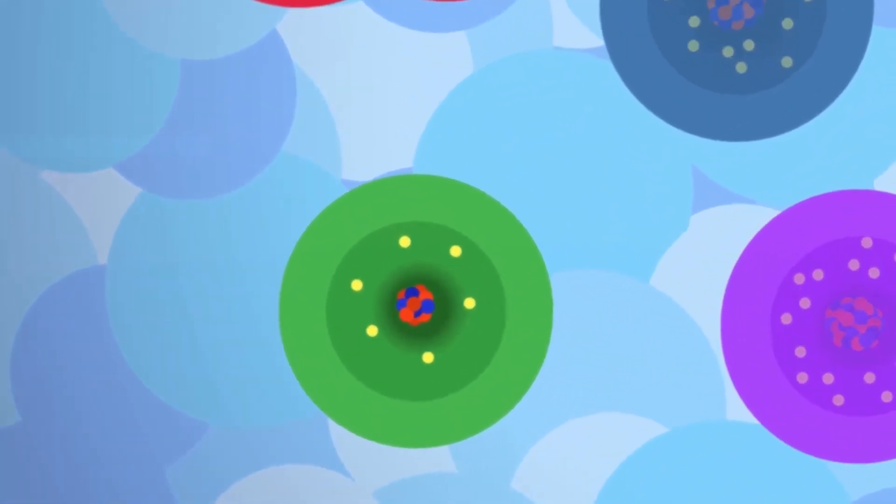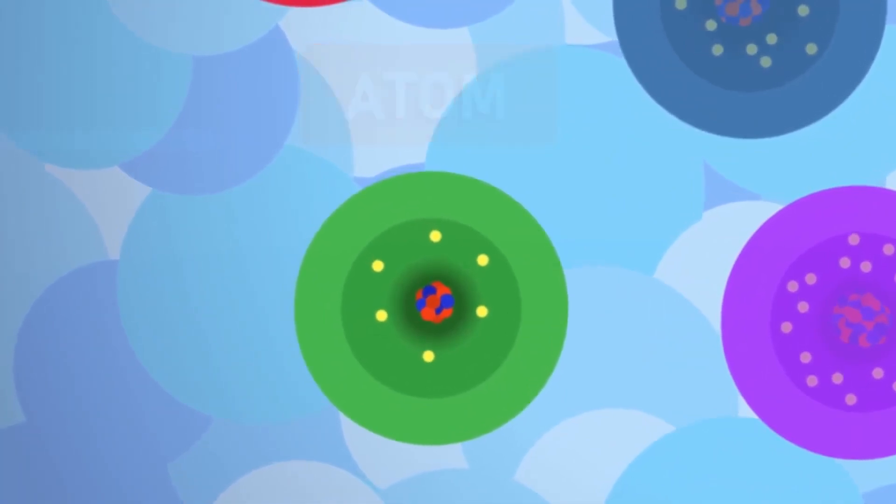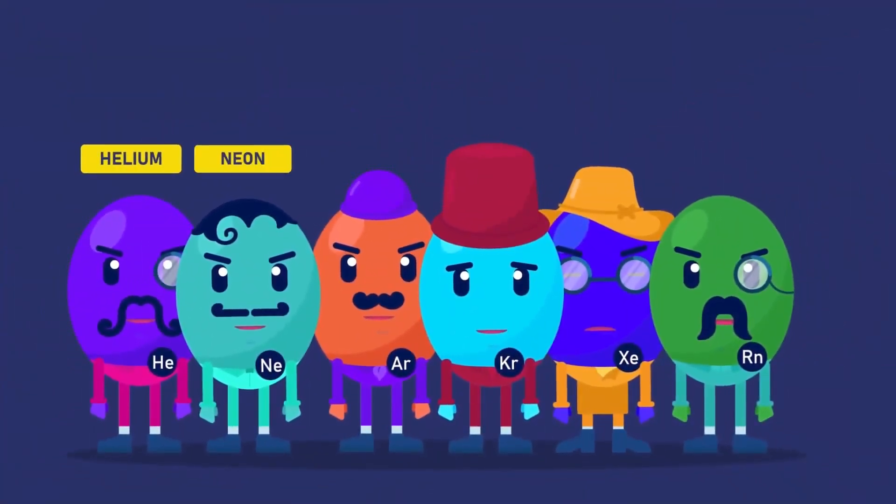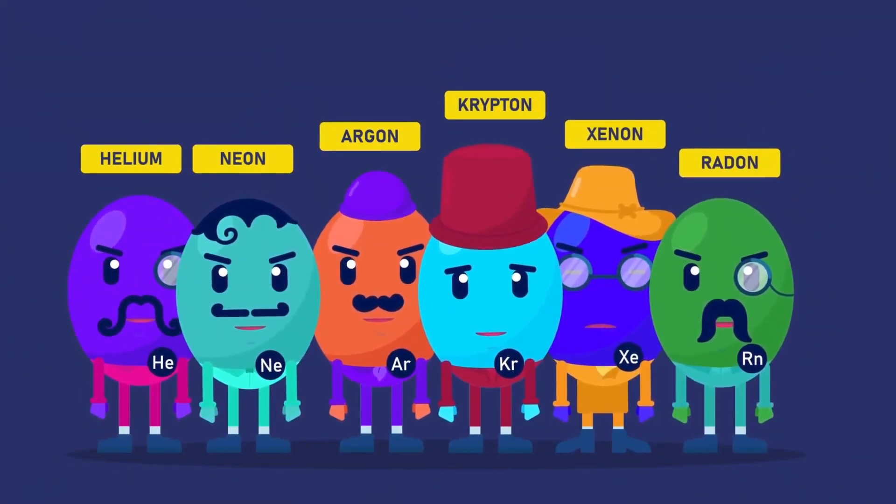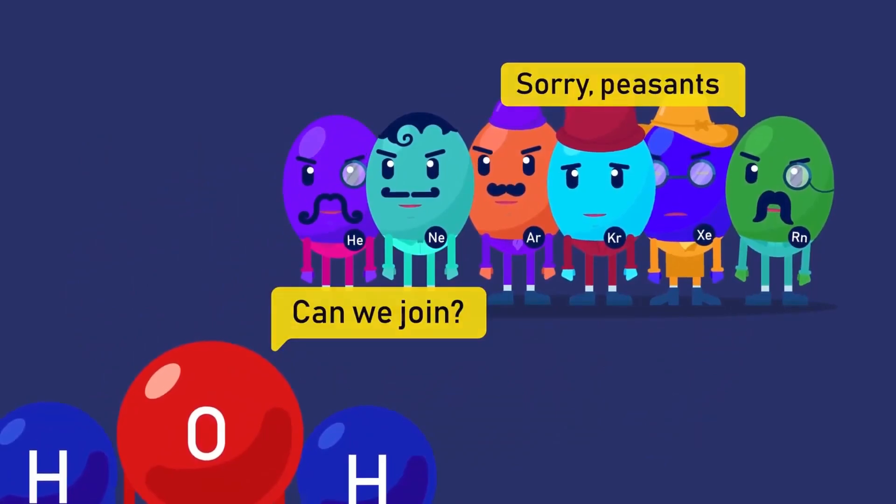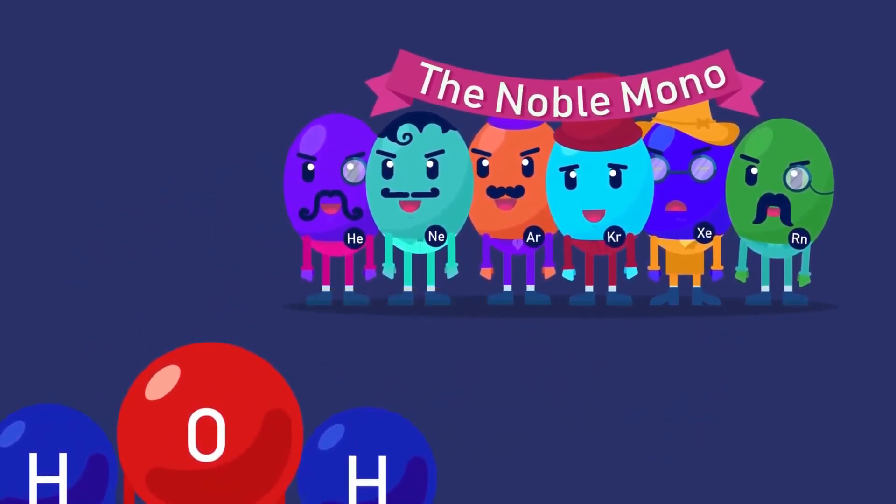The fundamental unit of an element is atom. Each element contains only one type of atom. Noble gases, such as helium, neon, argon, krypton, xenon, and radon, are elements that exist as individual atoms, which is why they are called monoatomic elements.